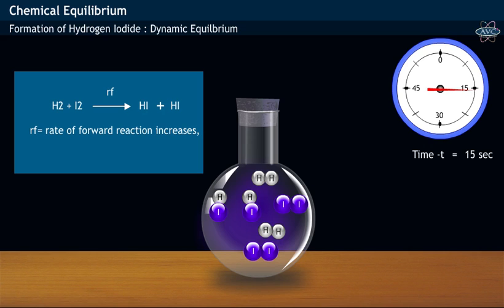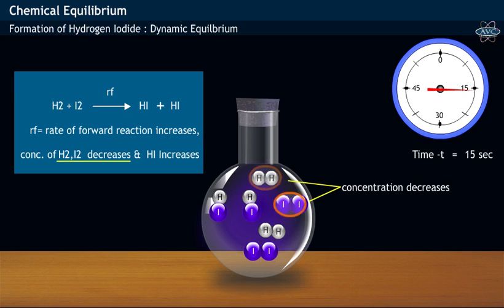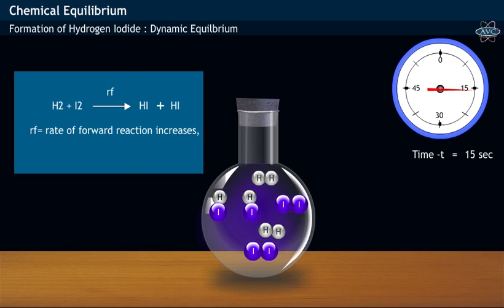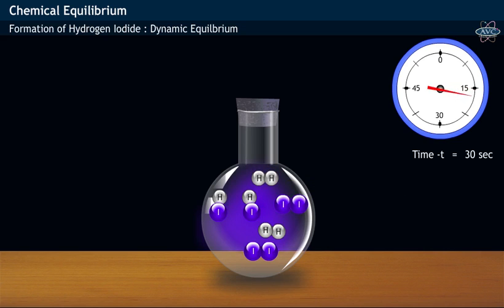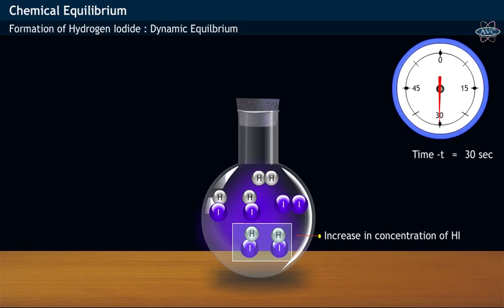In this reaction, the concentration of both Hydrogen as well as Iodine decreases with time. That is, rate of forward reaction increases. Simultaneously, after the passage of 30 seconds of time, the concentration of Hydrogen Iodide begins to increase.